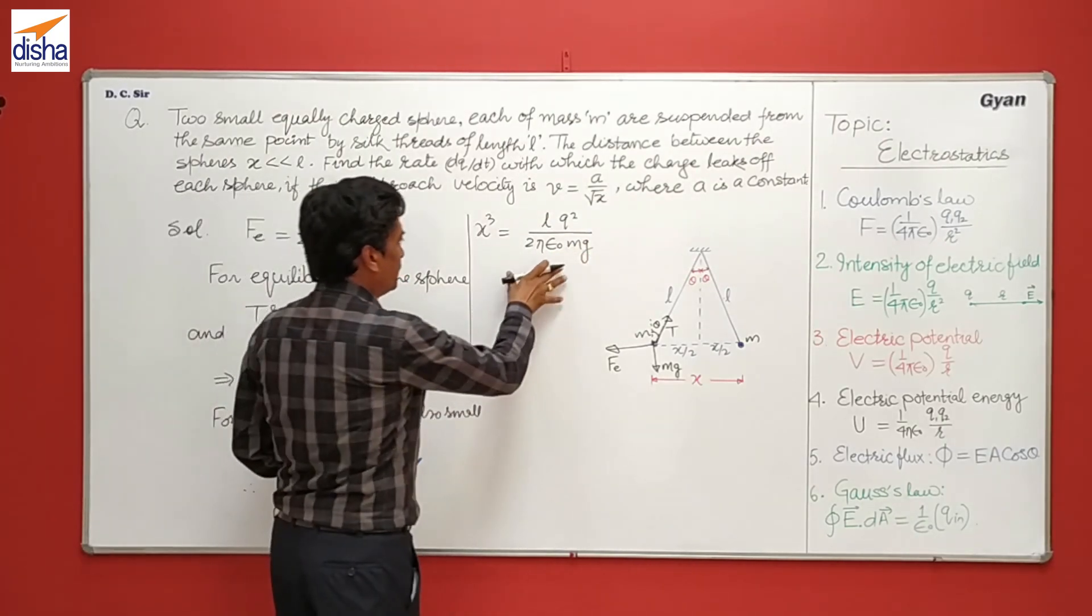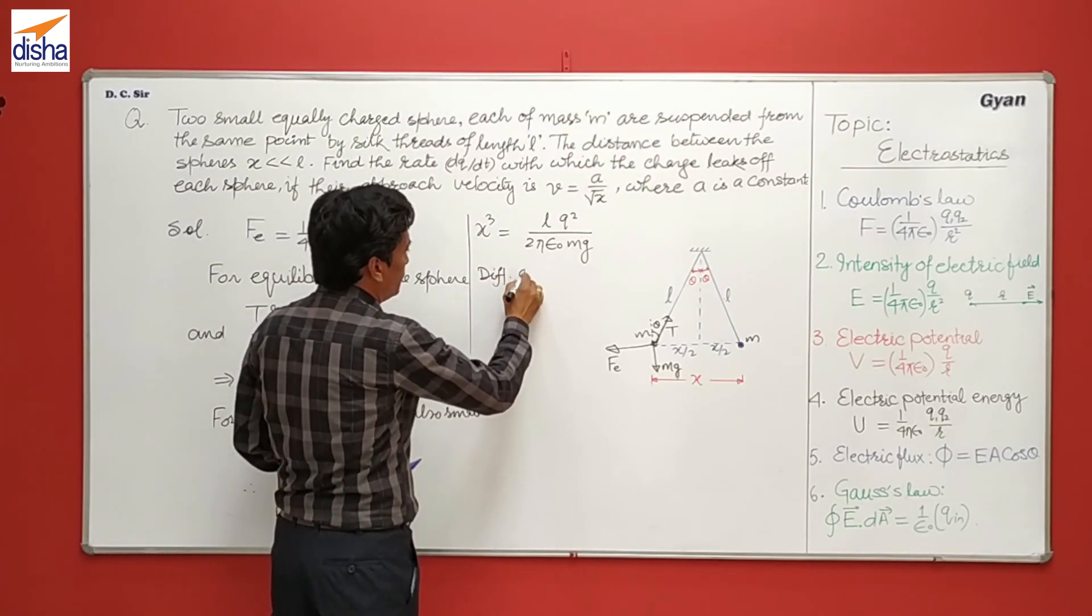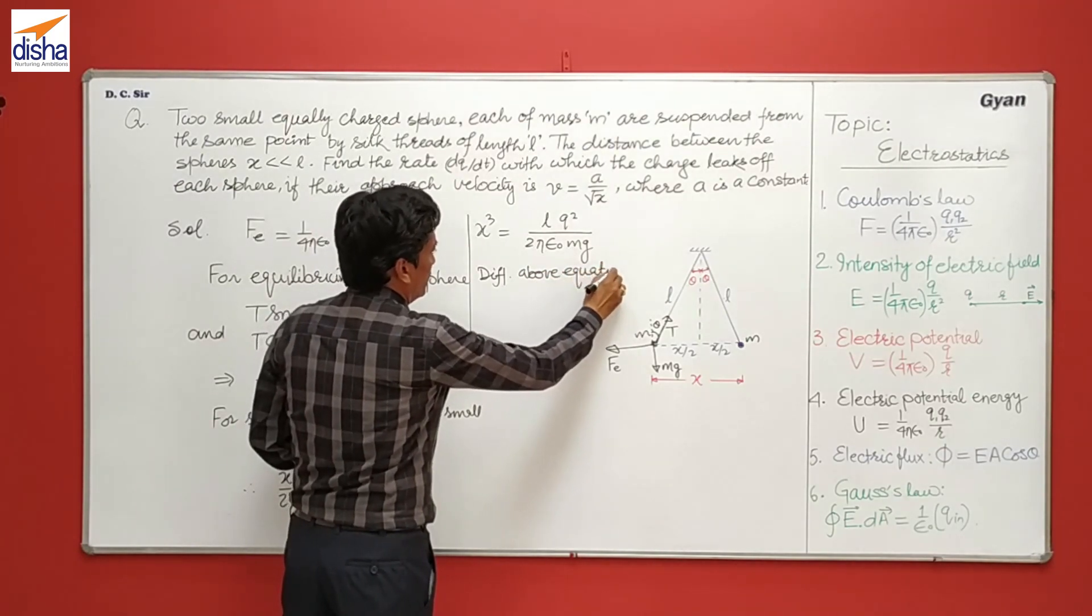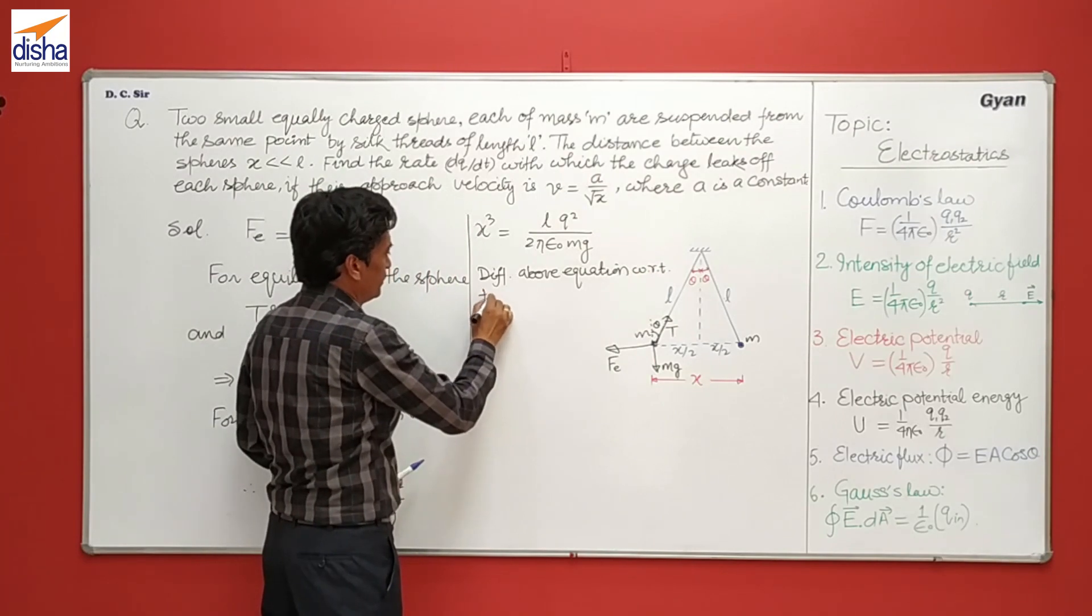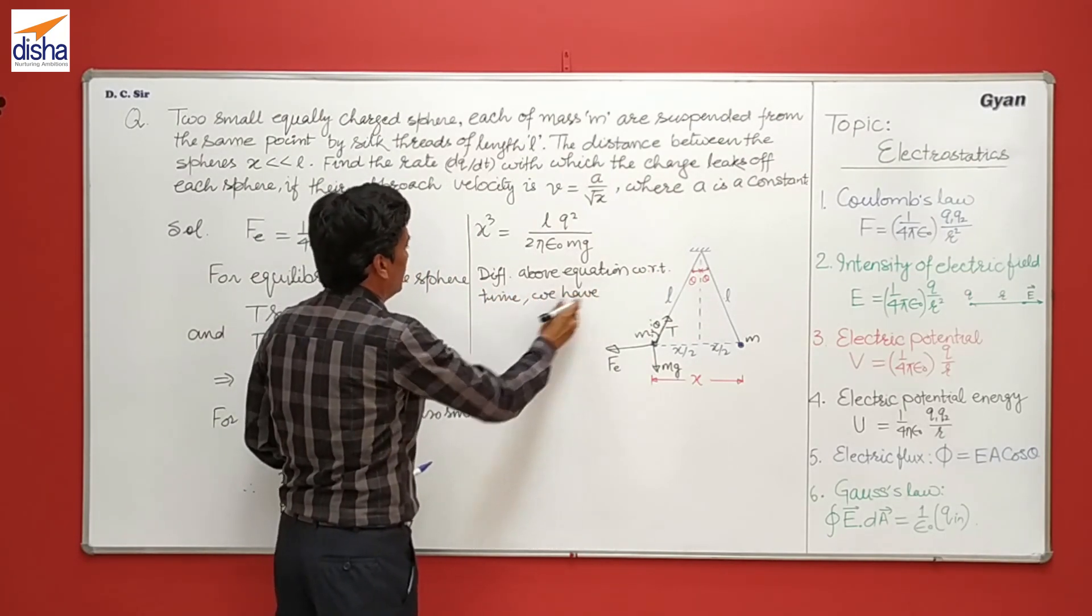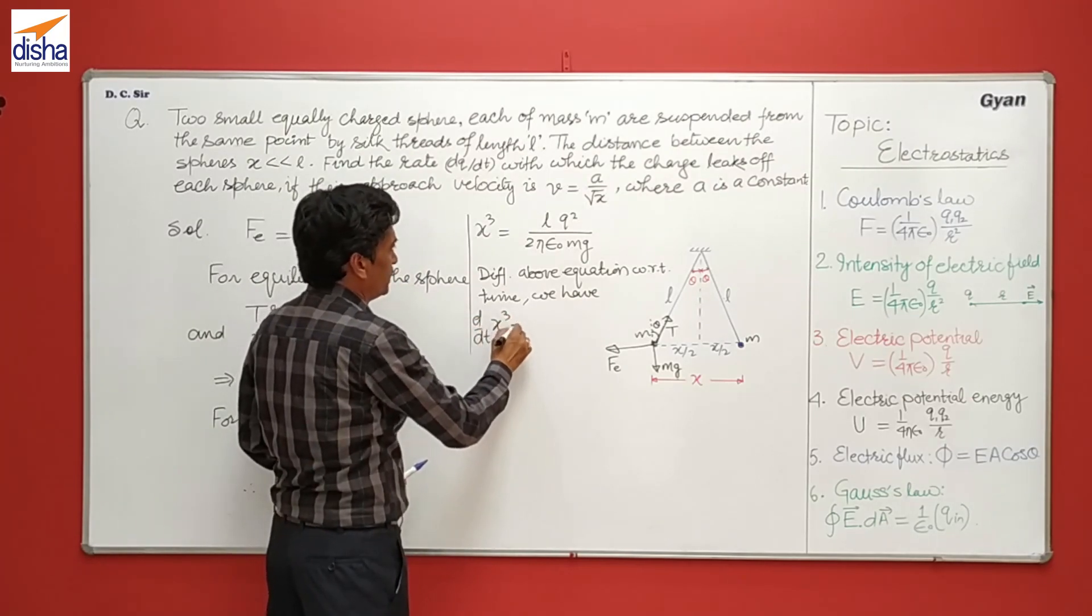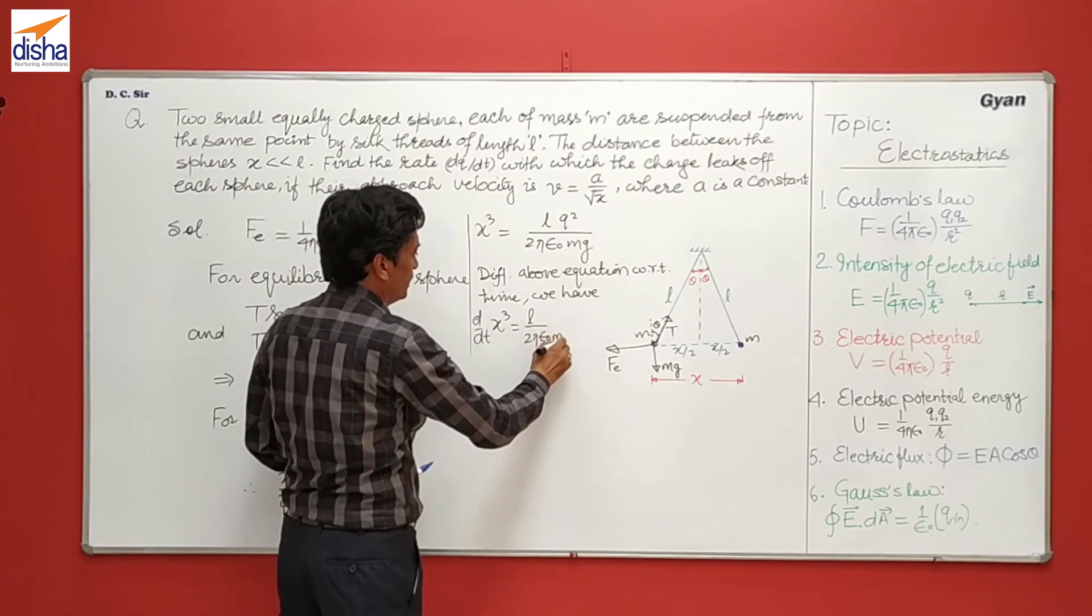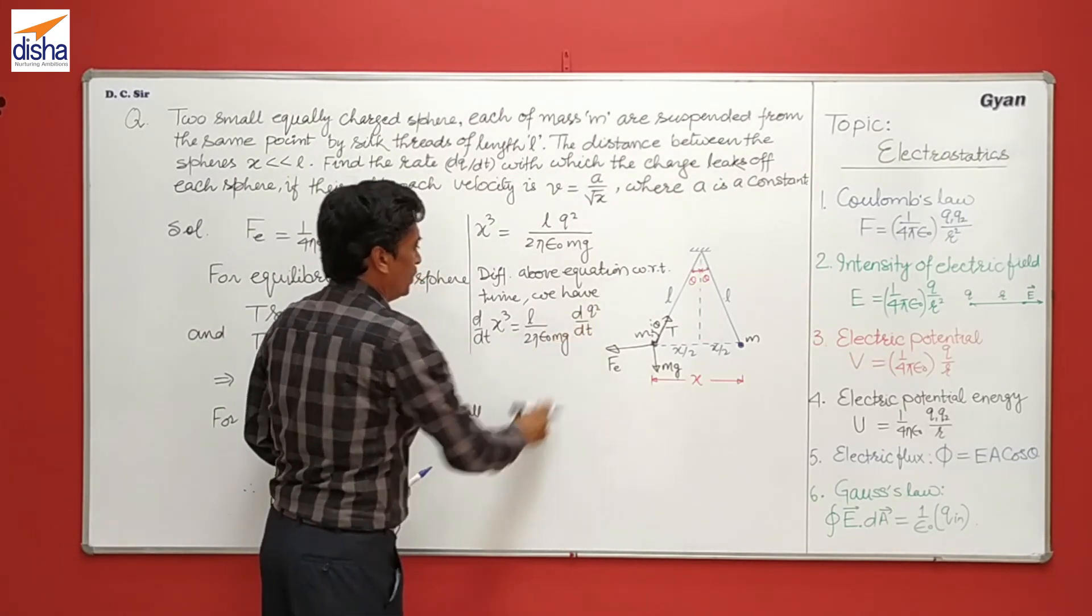Now differentiating this equation, the above equation, with respect to time, we have x cubed. This is constant here, take out of the differentiation, 2 pi epsilon naught MgL. This differential of q squared.